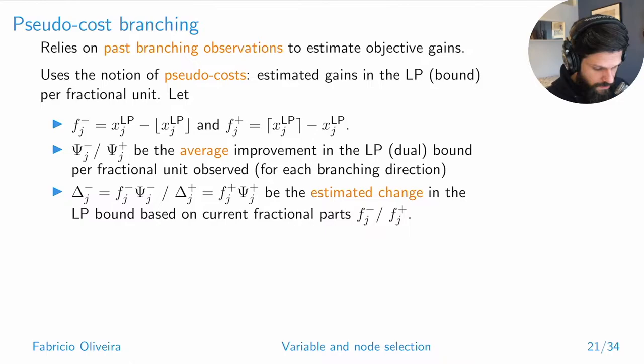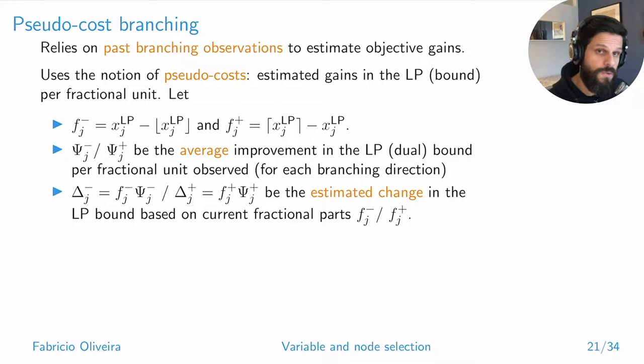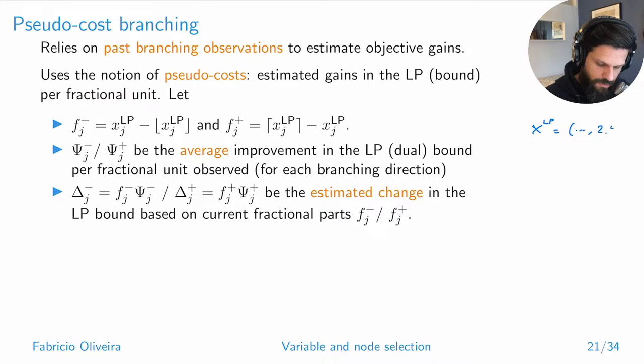You combine this difference and multiply by the average observed improvement in LP per fractional unit. Suppose in the past a variable was 2.4 and you set it less than or equal to 2. When you solved the LP you found another solution, and your z_LP had a given value — say 10.